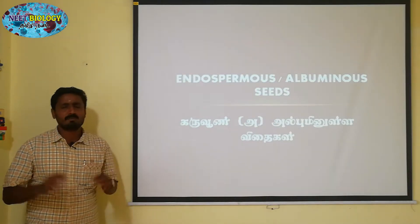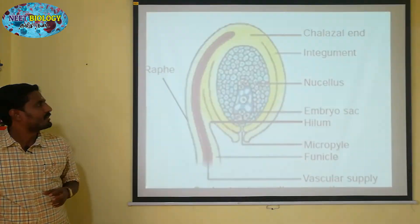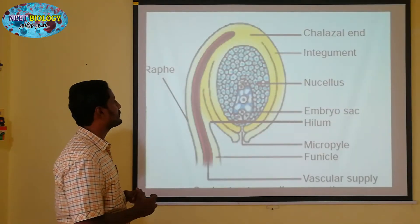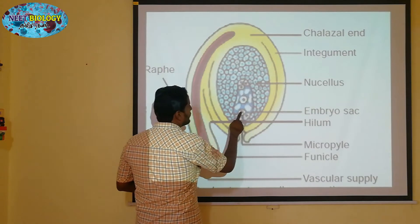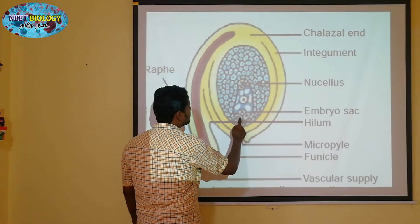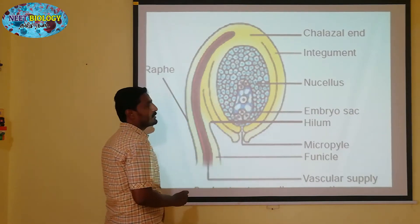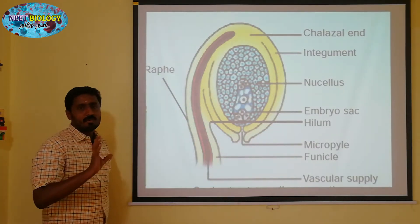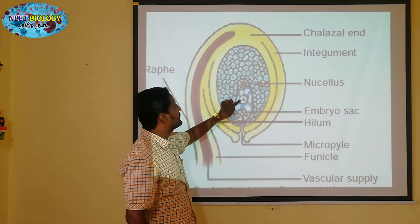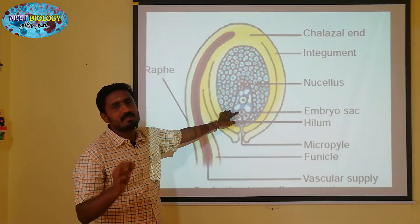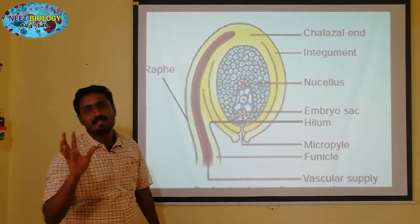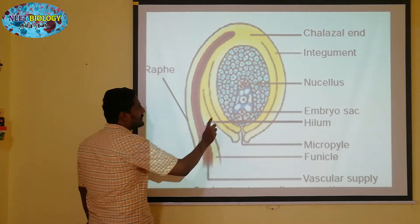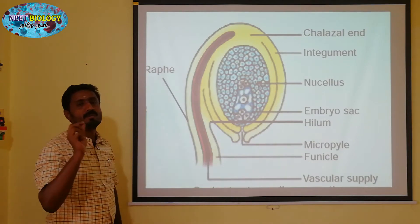The endospermous seed will be there at the center. Secondary nuclei will be at the top, nearby the chalazal, and it will form endosperm. Two male gametes are entering into the embryo sac and one will be fusing with the secondary nuclei to form the endosperm.